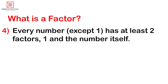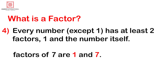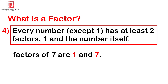Point 4 — every number except 1 has at least 2 factors: 1 and the number itself. For example, the factors of 7 are 1 and 7. So every number except 1 has at least 2 factors: 1 and the number itself.